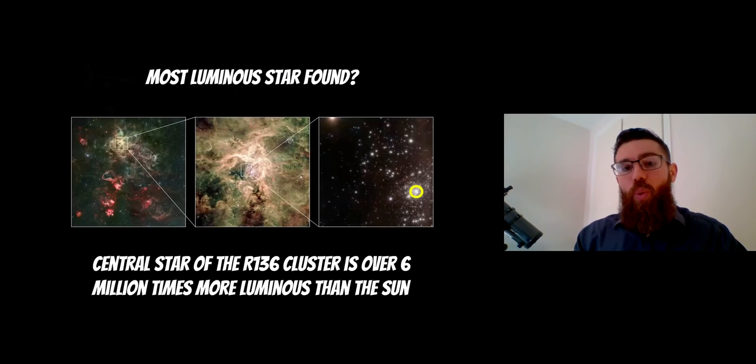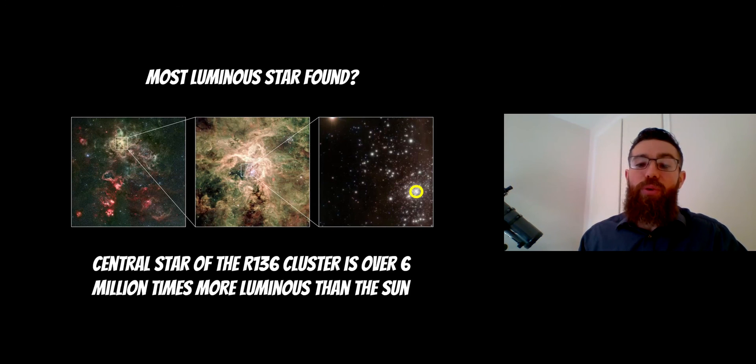So what is the most luminous star found to date? Well the central star in the cluster R136 is six million times more luminous than our sun so that is an incredible amount, a very very luminous star and that's right at the limit, the Eddington limit, so it will be losing a lot of material around it and undergoing a significant amount of mass loss.